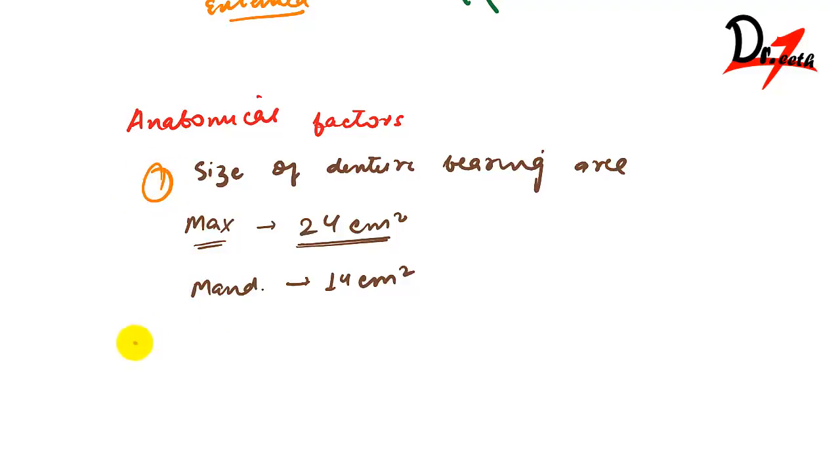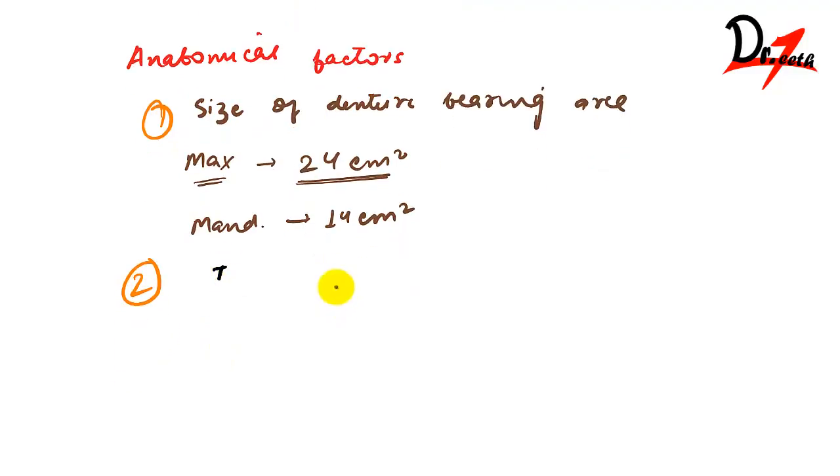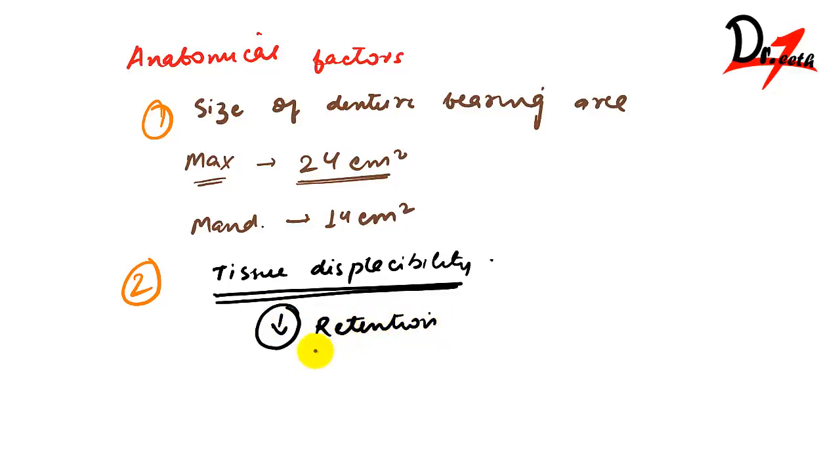The second anatomical factor is tissue displacability. If you've made an impression and during that time the tissue was displaced, this tissue will rebound when you place the denture, and it will lead to loss of retention.